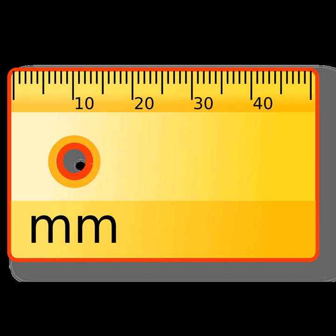The square mile is an imperial and U.S. unit of measure for an area equal to the area of a square with a side length of one statute mile. It should not be confused with mile-square, which refers to a square region with each side having the specified length.